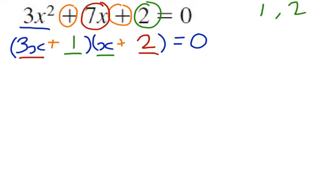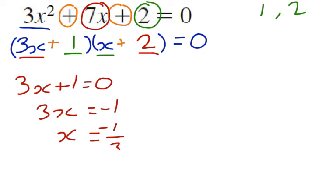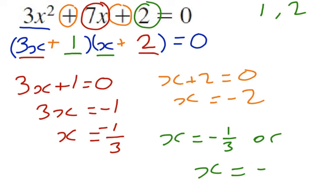So our factorized quadratic is 3x plus 1 in one bracket and x plus 2 in the other bracket. Now we solve in the same way and we get 3x plus 1 equals 0 which gives us 3x equals minus 1 which gives us x equals minus 1 third. And the other part gives us x plus 2 equals 0, so x equals minus 2. So our final answer is x equals minus 1 third or x equals minus 2.